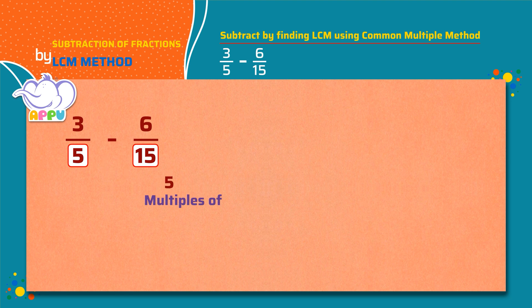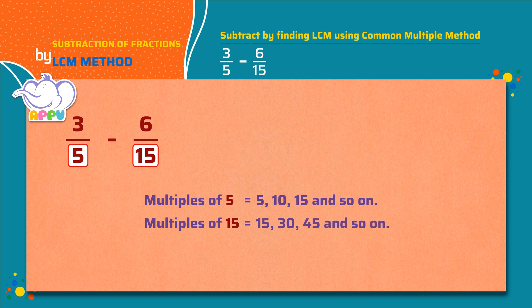Multiples of 5 equal 5, 10, 15, and so on. Multiples of 15 equal 15, 30, 45, and so on. We see that 15 is a common multiple of 5 and 15.